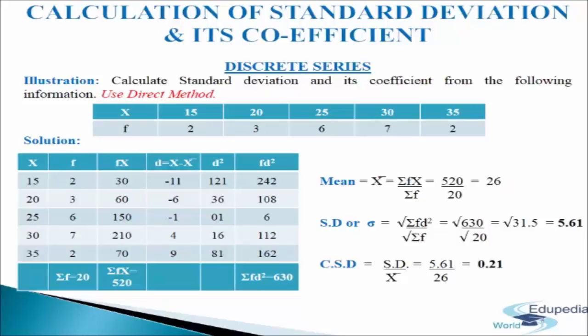In the third column we write fx — we multiply frequency with the variables. 15 into 2 gives 30; 20 into 3 gives 60; 25 into 6 gives 150; 30 into 7 gives 210; and 35 into 2 gives 70. We add up these values and get sigma fx equals 520. Now we calculate the mean: mean equals sigma fx divided by sigma f, so 520 divided by 20 gives mean equals 26.